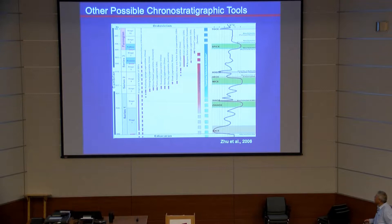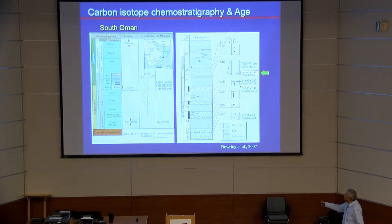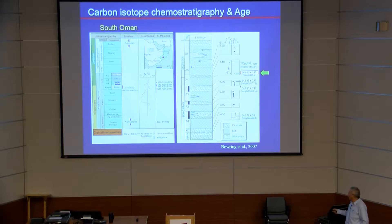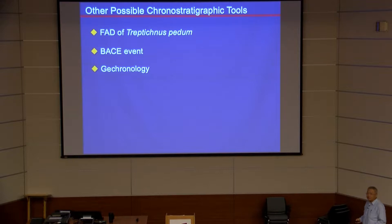This is practically useful: if you look at the publications, a lot of people have used age 541 or 542 Ma as the base of Cambrian, or used the base excursion as the base of Cambrian. This can also be tied to biological events. Based on the South Armand sections done by Sam Bowen and colleagues, the base excursion is right above the extinction level of Cloudina and Namacalathus — shelly fossils — making it a very useful marker.